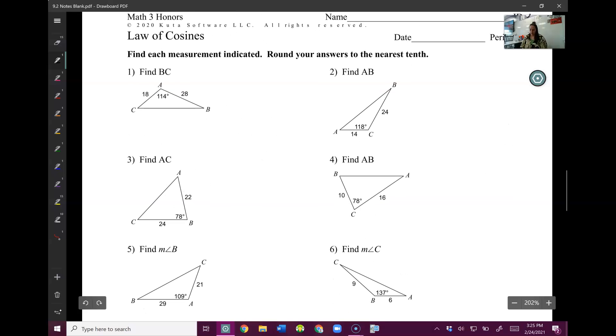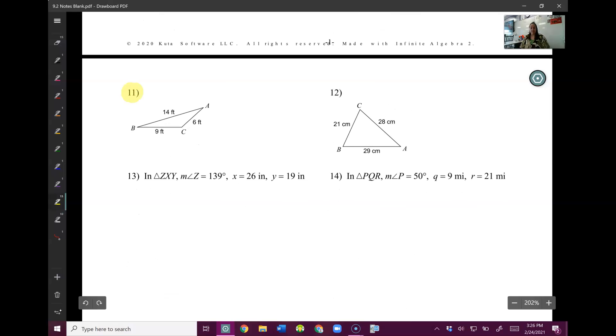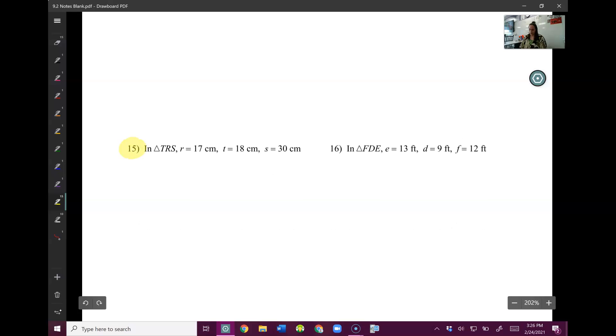For your homework, you will do problems one and three. And keep in mind, these problems, you don't have to solve the whole triangle. When it says find BC, that means this side. A.K.A. when I go across from big A, this is find little A essentially. And that's all you need to find. You don't need to find big B or big C. Just little A. Same thing for this one. Go across. This is actually the same thing as finding little B. And then you also have question 11 to do and question 15. So you can go ahead and get started on your homework now.